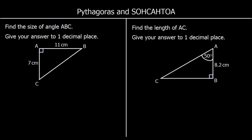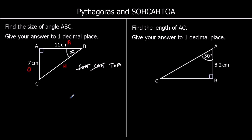The next question says: find the size of angle ABC, giving your answer to one decimal place. That's this angle here. We can't use Pythagoras to find a missing angle, but we know two of the lengths, so we can use SOHCAHTOA. Label the triangle: hypotenuse is the longest side opposite the right angle; opposite is opposite our angle; adjacent is in between the angle and the right angle. O is 7, A is 11, and H is not in the question, so it's TOA — tan(θ) = O ÷ A.